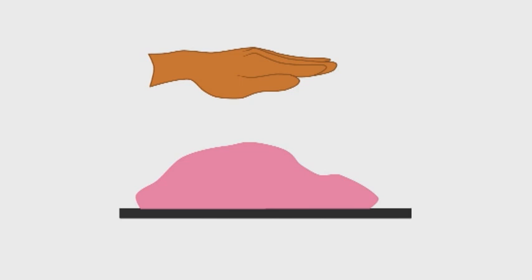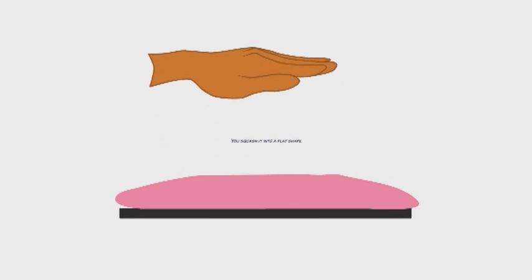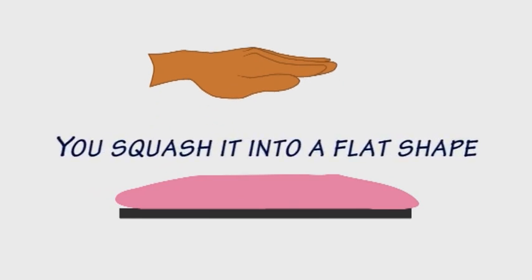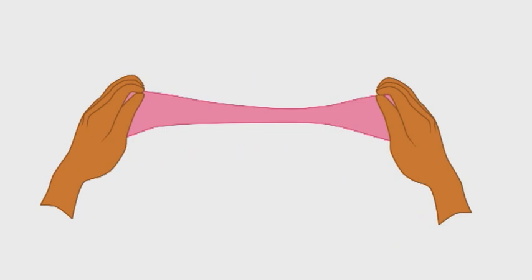What happens when you put a piece of soft play-doh, plasticine, or modeling clay on a table and push down on it? You squash it into a flat shape. And what happens when you take it in your hands and pull them apart? You stretch it out.